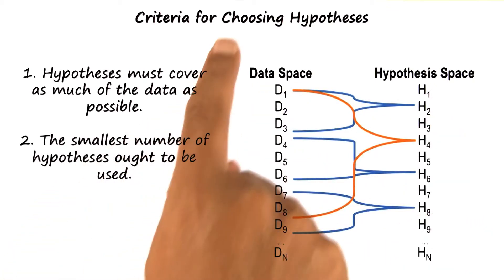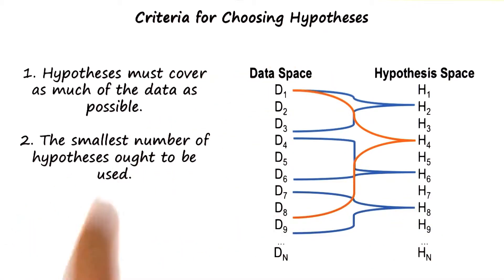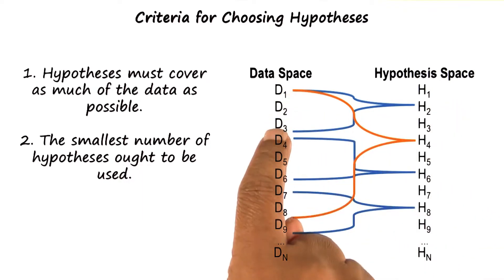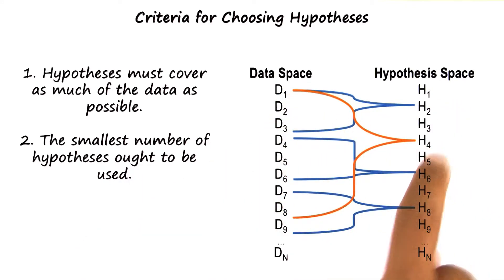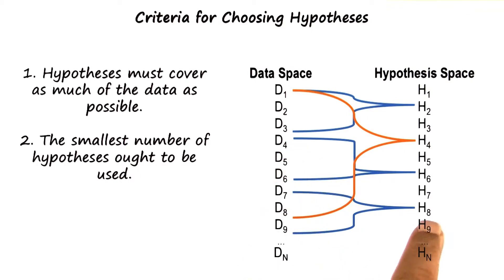The second principle for choosing between competing hypotheses is called the principle of parsimony. All things being equal, we want to pick the simplest explanation for the data. So consider the following scenario. H2 explains data elements D1 to D3. H4 explains data elements D1 through D8. H6 explains data elements D4 to D6. And H8 explains data elements D7 to D9.